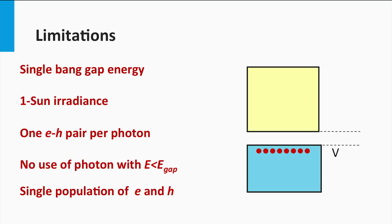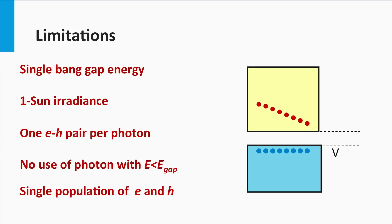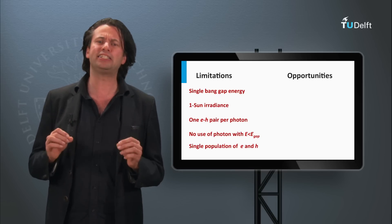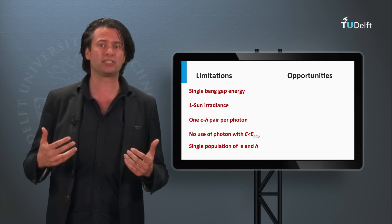Finally, the charge carriers populate single energy levels. Light absorption excites electrons and holes up into the conduction band or down into the valence band. However, the charge carriers relax very fast — the electron to the bottom of the conduction band and the hole to the top of the valence band. The potential difference between the charge carriers right after excitation is not utilized. In addition, in the band gap there are no states, so light below the band gap does not excite any charge carriers.